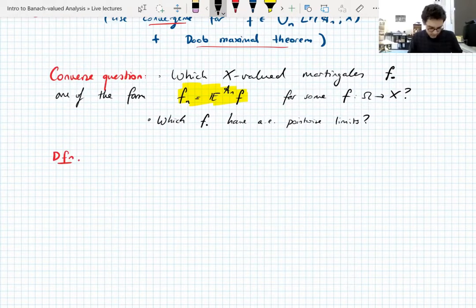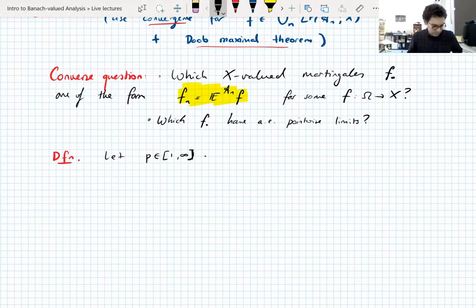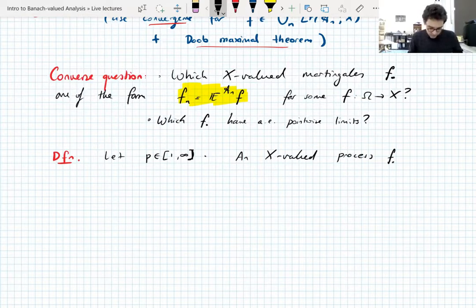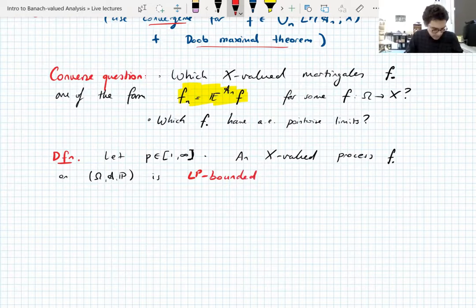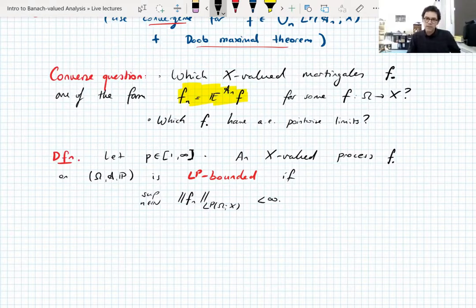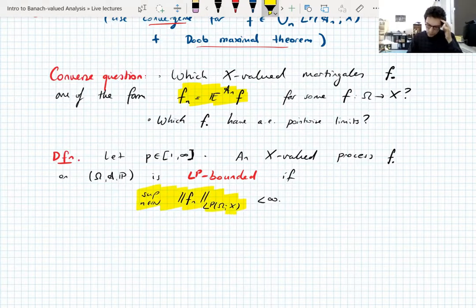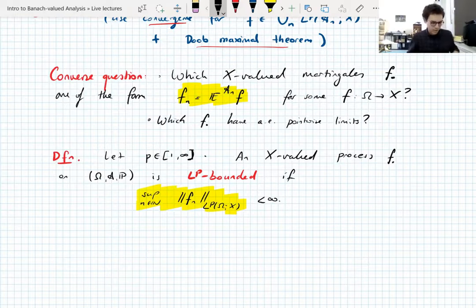We start, as always, with a definition. We take p between 1 and infinity — and we do want to include infinity this time. An X-valued stochastic process f• on a probability space Ω is called Lp-bounded if the supremum over n of the Lp norm of fn is finite — so you have a uniform Lp bound on all elements of the process. Some people actually give this thing a name and call it the Lp norm of the process — it's a natural norm on a stochastic process.